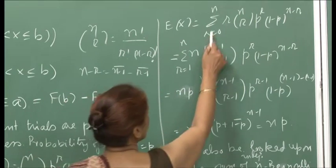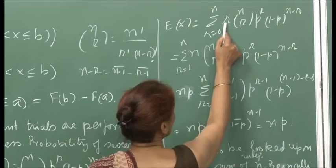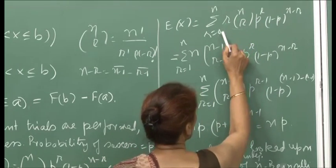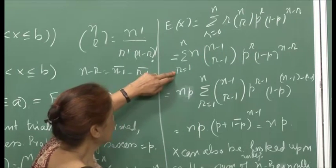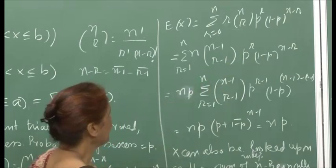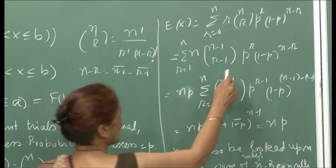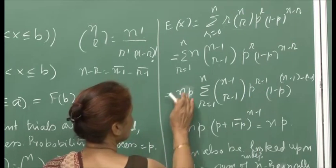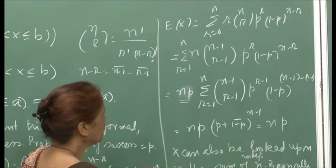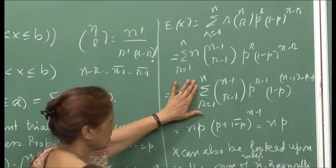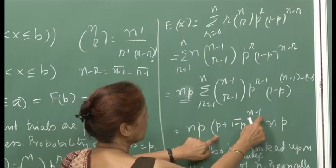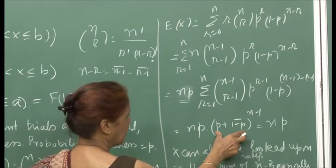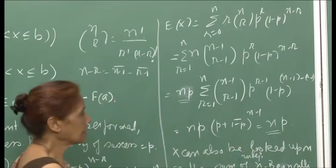Taking out a factor of p, we are left with p^(r−1) and the sum over n−1 choose r−1 terms. This is again a binomial expansion of (p + (1−p))^(n−1) = 1. Therefore the expected value equals n·p — a straightforward computation.